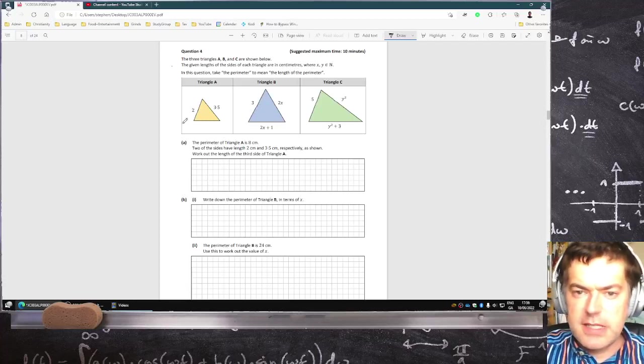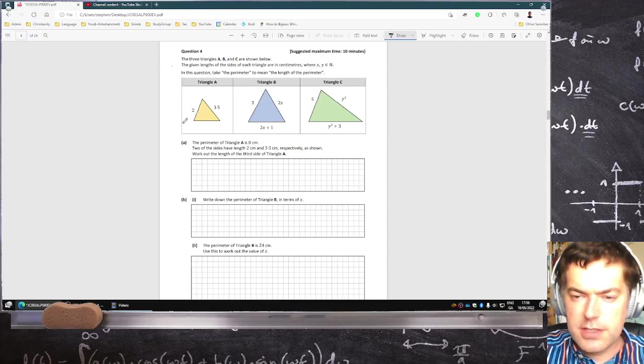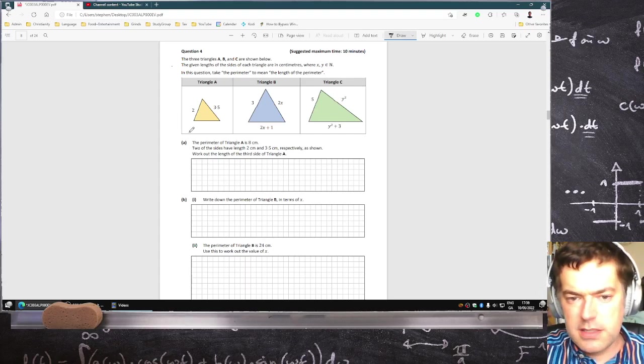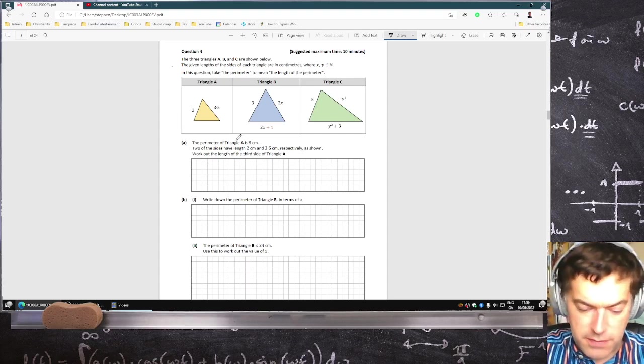Okay, the three triangles ABC are shown below. The given lengths and sides of each triangle are in centimeters, where X and Y are natural numbers. In this question, take perimeter to mean the length of the perimeter. The perimeter of triangle A is eight centimeters. Two of the sides have length two. Okay, well that's easy peasy. Just take these two numbers away from 8.